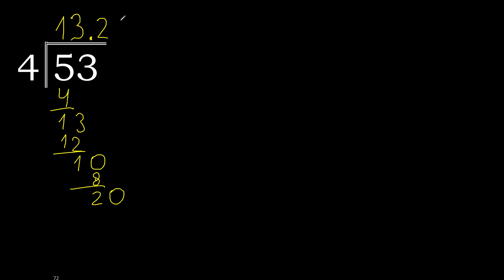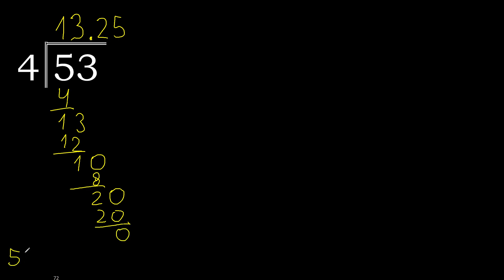4 multiplied by 5 is 20. 20 minus 20 is 0. Therefore finish. 53 divided by 4 is 13.25.